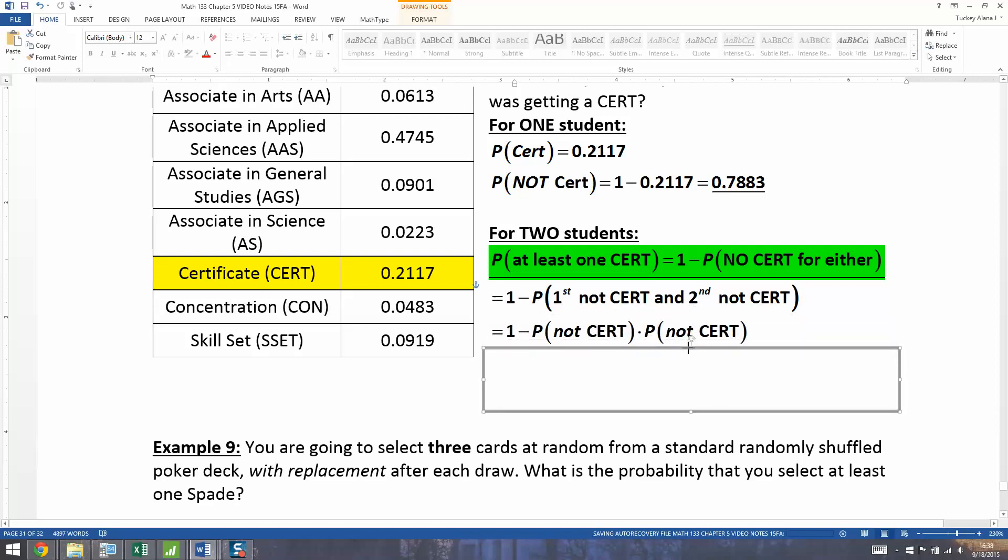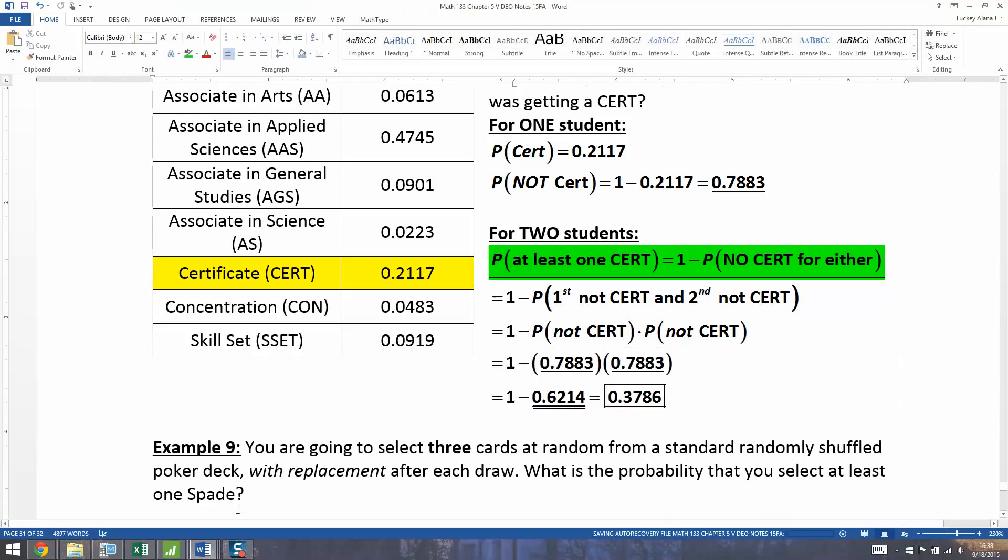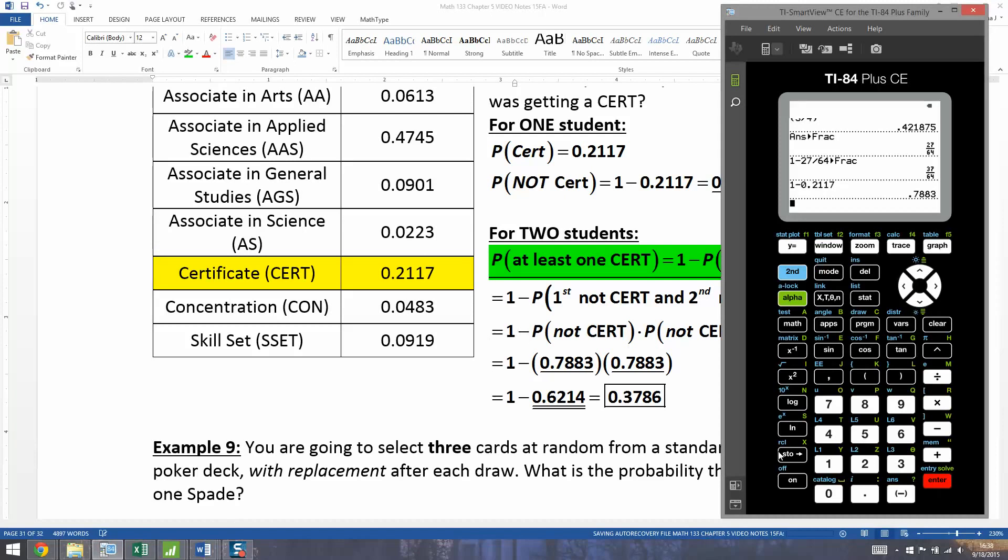That means you're going to take 1 minus 0.7883 times 0.7883. And when you do that with your calculator, 0.7883 squared, you get 0.6214 and then 1 minus that result will get you 0.3786.